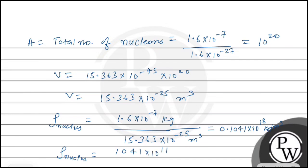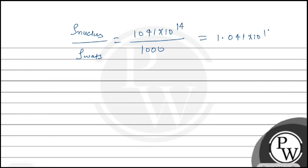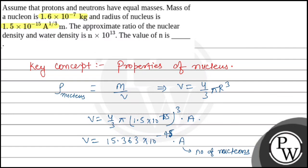Now we need the ratio of density of nucleus to density of water. Density of nucleus is 1.041×10¹⁴ and density of water is nearly 1000 kg/m³. So the ratio = 1.041×10¹⁴ / 10³ = 10.41×10¹³. Therefore n = 10.41.